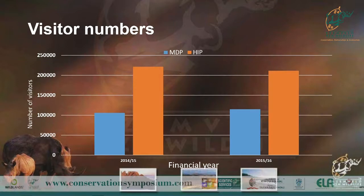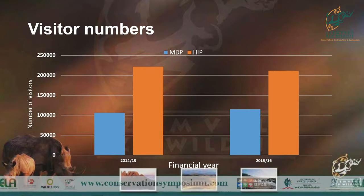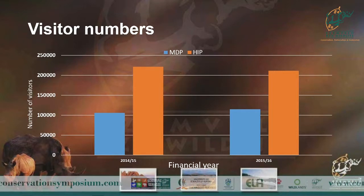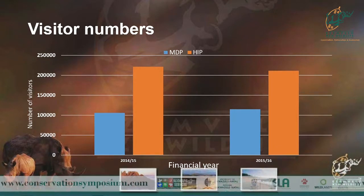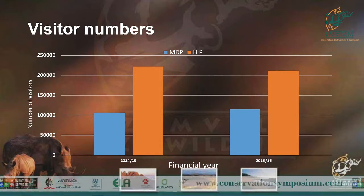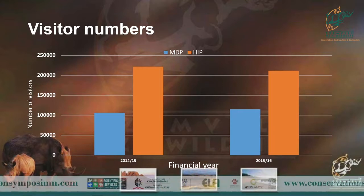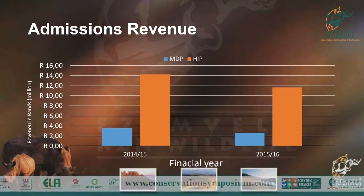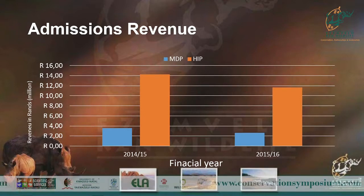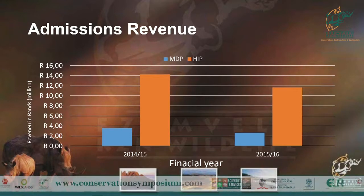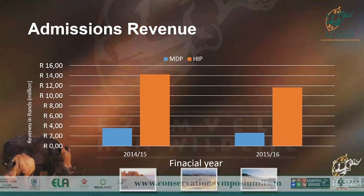I compared Maluti-Drakensberg, shown in blue, and Hluhluwe-iMfolozi Park (HIP), shown in red. From just looking at that data over a two-year period, we find more visitors going through to HIP compared to Maluti-Drakensberg. Looking at admissions revenue — in the millions, from two million up to sixteen million rands — it makes sense that we'd make more money at HIP for people entering through the gates.